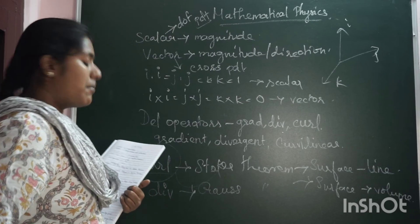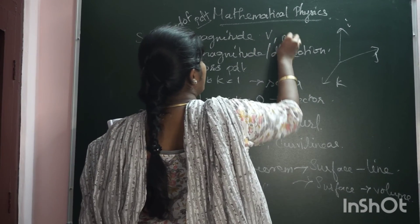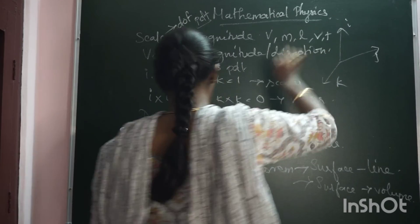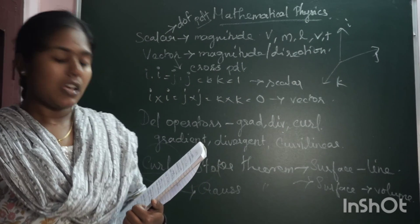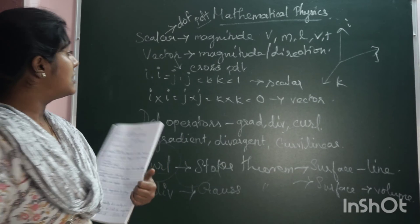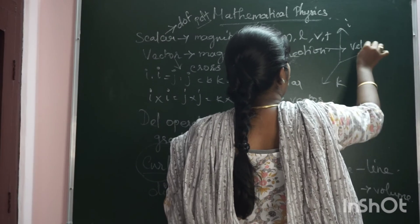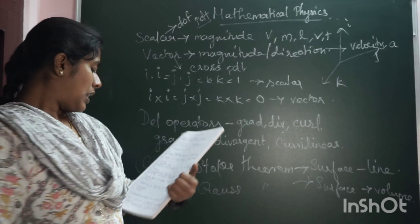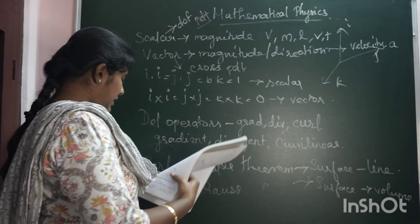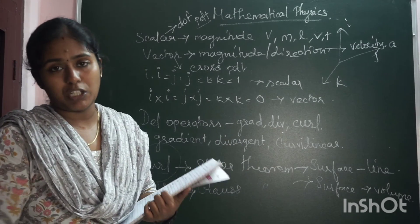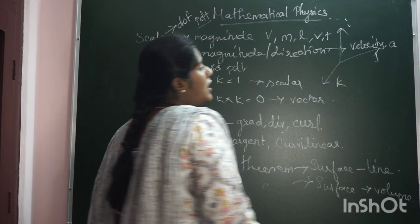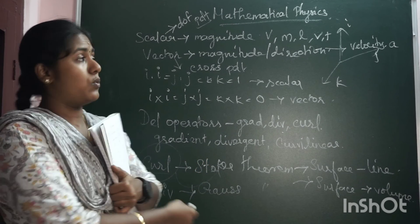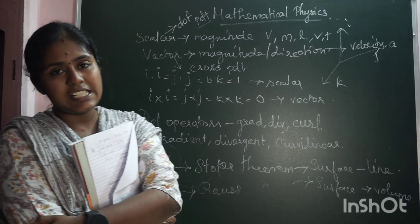So scalar defines only the magnitude. Examples include: volume, mass, length, speed, and velocity. A scalar field acts over one region — it distributes over the region.